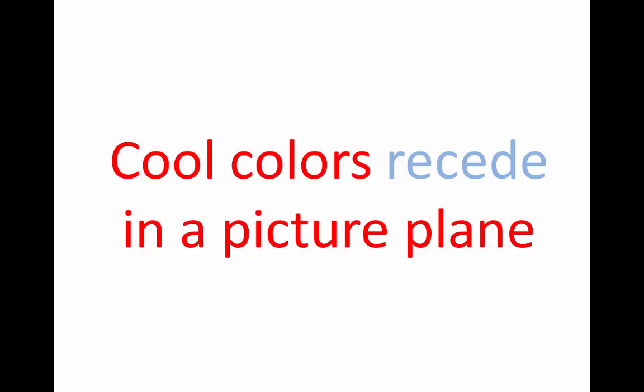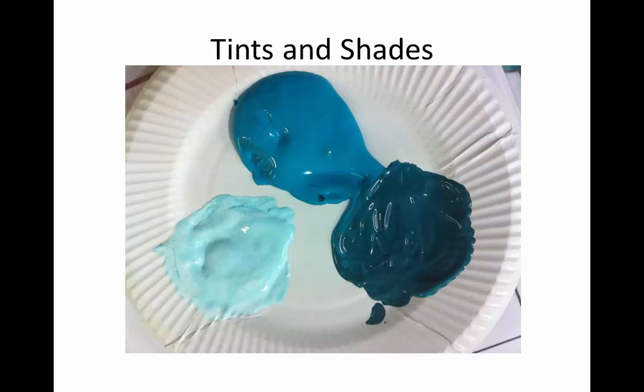The color wheel provides all of the hues that are in the spectrum. However, sometimes hues are lightened or darkened to get different mixtures of color. When white is added to this hue of blue, we have a tint of blue or sky blue.